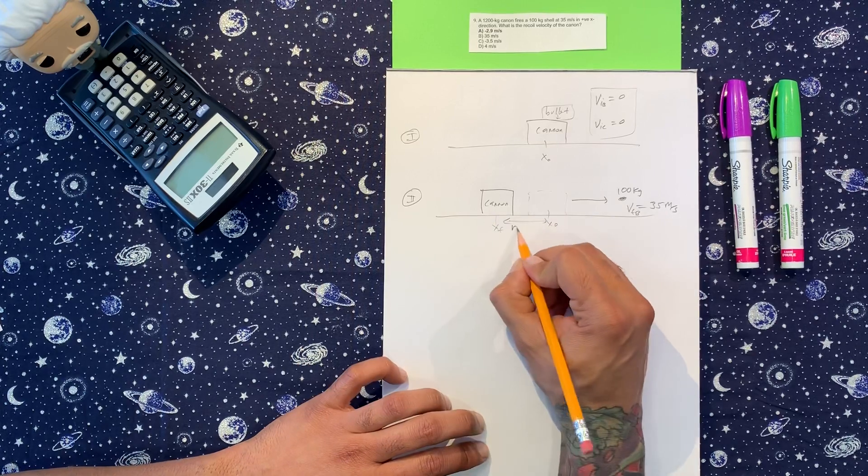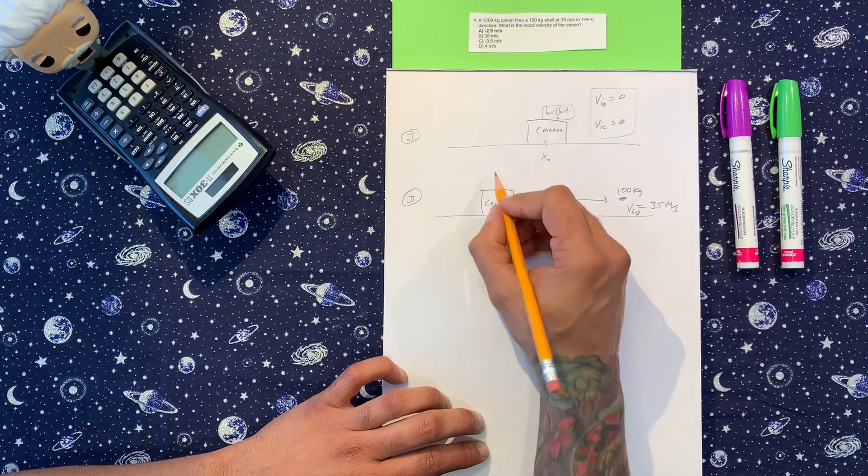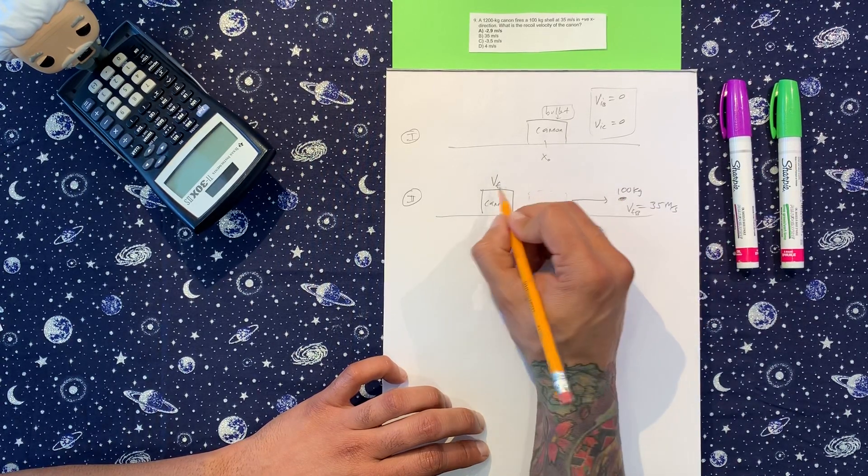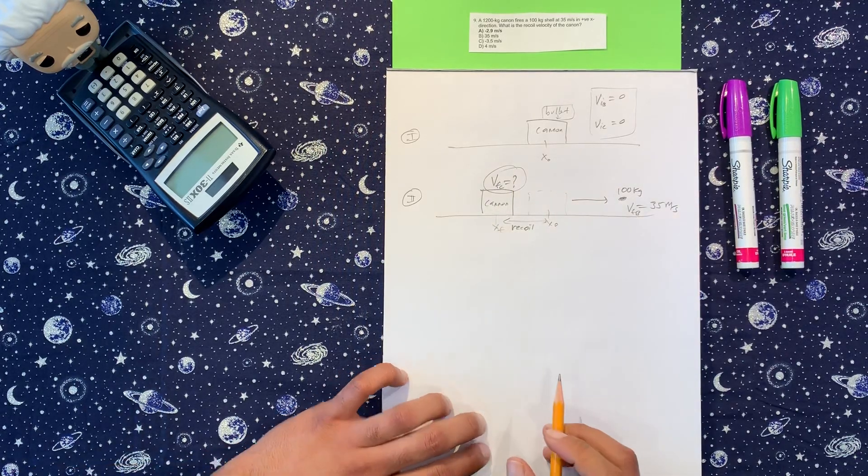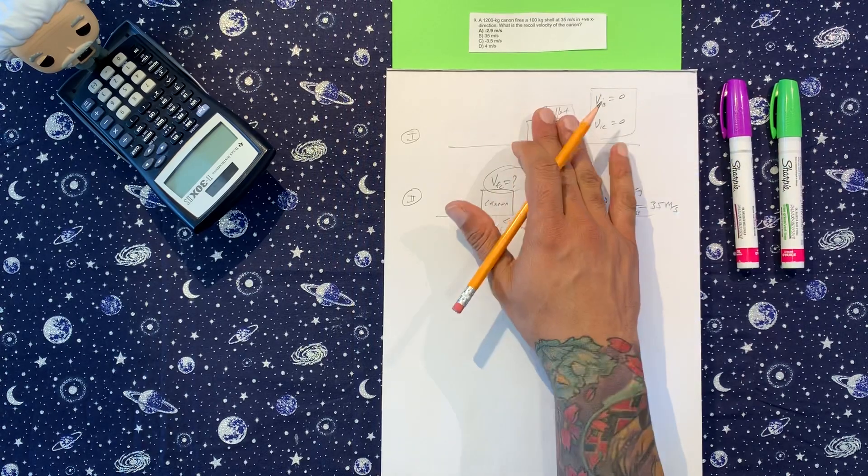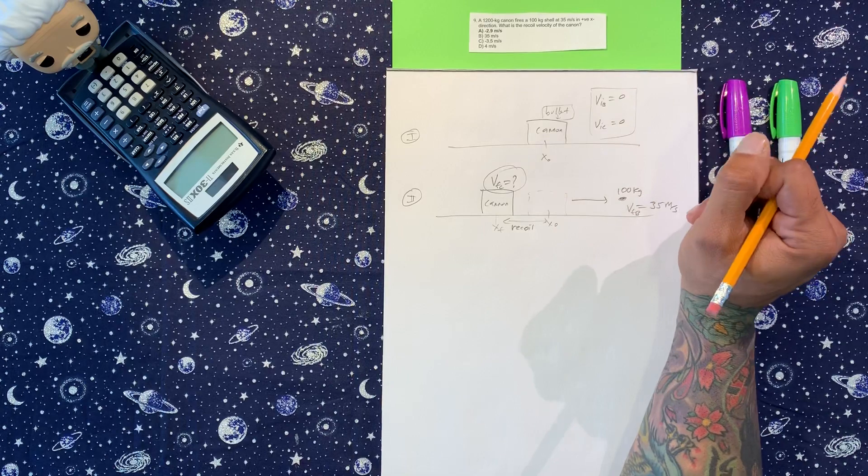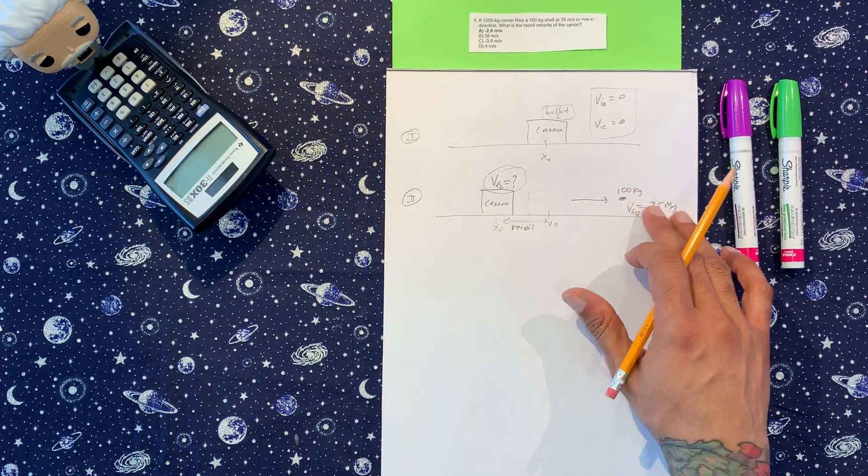And this is the recoil. It goes back this much. What is the velocity final for the cannon? That's what we want to know.